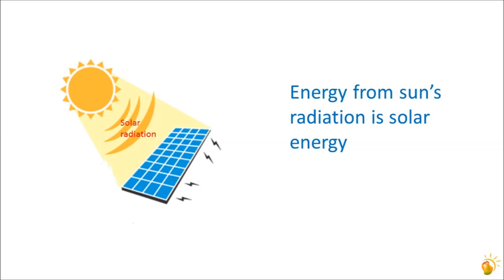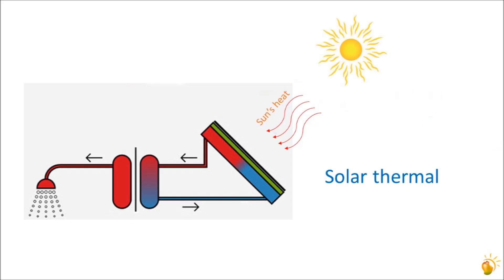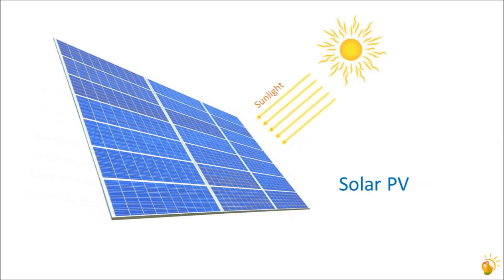First, let us understand the two main ways by which we can recover energy from sunlight. Solar energy is energy from the Sun's radiation. This energy can be harnessed as solar thermal energy, collecting the heat from the Sun, and as solar photovoltaic or solar PV, that uses the light from the Sun.